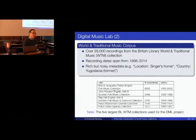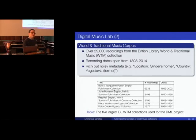For world and traditional music we had access to over 29,000 recordings from the British Library's world and traditional music collections. Recording dates span a wide range — the oldest ones, from the 19th century, are essentially wax cylinder recordings, a big topic at this symposium — mostly folk songs from English, Welsh, and Scottish Gaelic languages, along with some historical recordings made by the former empire.